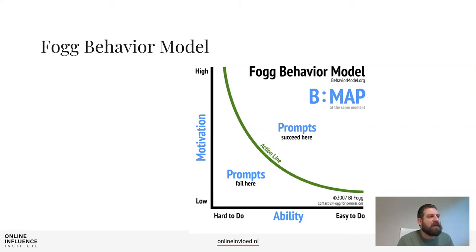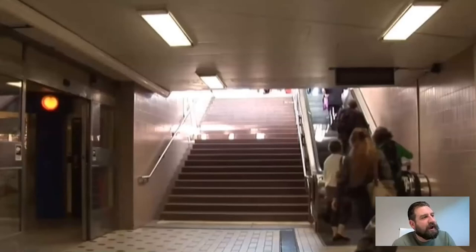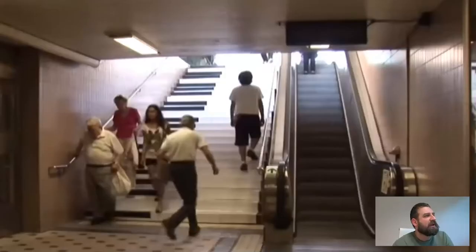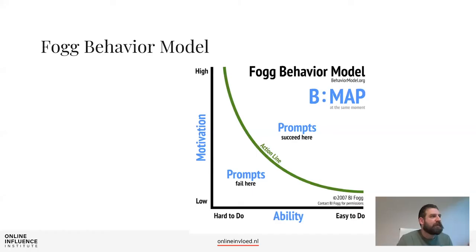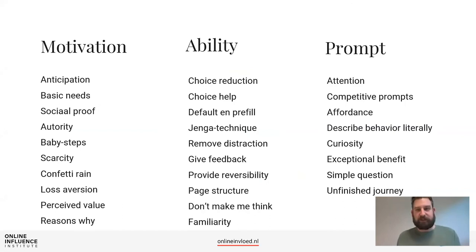Often we think if people don't do what we want, they're not motivated enough. But Fogg showed there are two other important factors. A great example: lots of people take escalators, so to get people to take the stairs for their health, they created a piano staircase — when you walked on it, it made music. More and more people started taking the stairs. In Indonesia, they dressed up actors as ghosts to prevent people going outside and spreading coronavirus. In our book we describe 37 principles to boost motivation, increase ability, and design winning prompts.